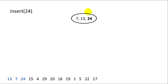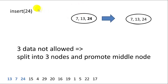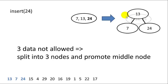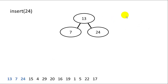When we add 24 to the root node, we see that we're only allowed to have 2 items in a node, so we need to split. We promote the middle value, 13, to the new parent, and 7 and 24 become the left and right children. So now our new root is 13, and 24 has been successfully inserted.